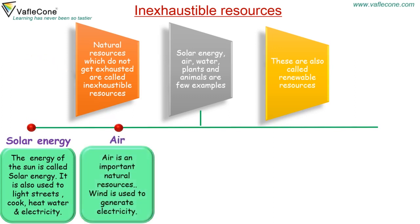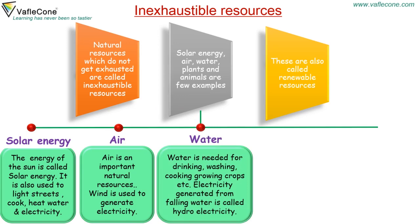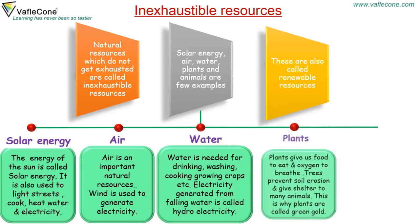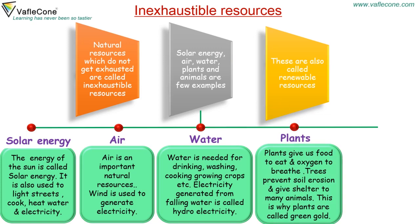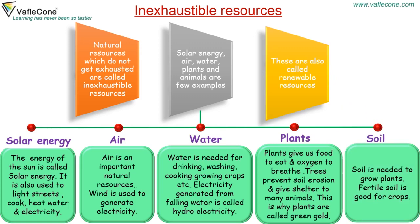Air is an important natural resource. Wind is used to generate electricity. Water is needed for drinking, washing, cooking, growing crops, etc. Electricity generated from falling water is called hydroelectricity. Plants give us food to eat and oxygen to breathe. Trees prevent soil erosion and give shelter to many animals. This is why plants are called green gold. Soil is needed to grow plants, and fertile soil is good for crops.